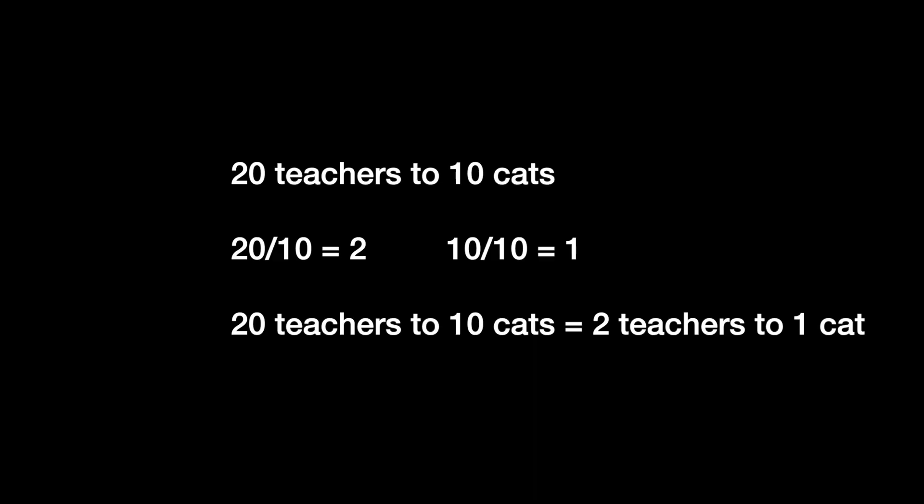In order to simplify the ratio of 20 teachers to 10 cats, we need to find the greatest common factor. 2 times 10 is equal to 20, and 10 times 1 is equal to 10. So our greatest common factor is 10. That turns our ratio of 20 teachers to 10 cats into a ratio of 2 teachers to 1 cat.